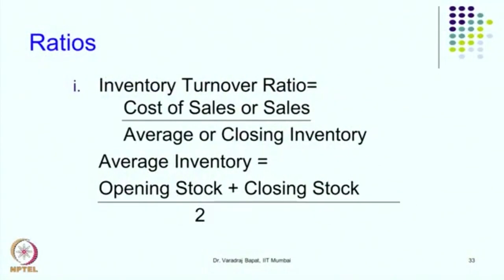Just as we analyze fixed assets, we can also see how efficiently the business uses working capital. The working capital turnover ratio is sales divided by working capital (current assets minus current liabilities). A higher ratio indicates greater efficiency. This ratio is subdivided into inventory turnover, debtors turnover, and creditors turnover, allowing us to know the efficiency of each part of the business — stock management, debtors management, and creditors management.